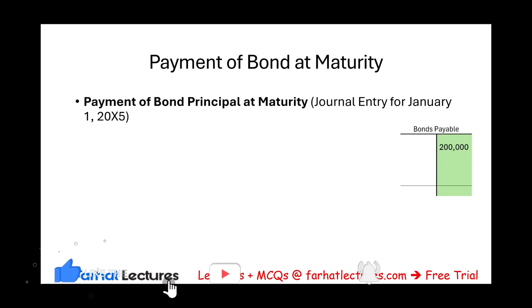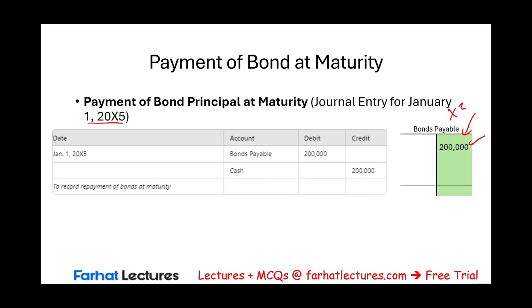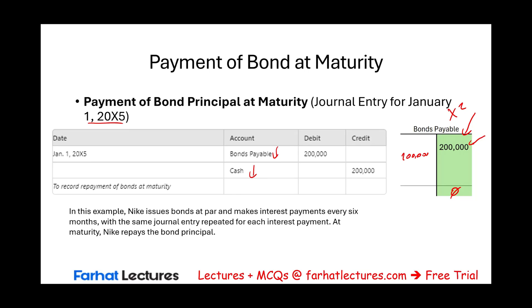Then on January 1st, 20X5, what happens to this bond? We established this bond in year X2, and now we have to pay it off. The company will pay back the face value of the bond because bonds payable is always recorded at face value — whether you received more than face value (premium bond) or less (discount bond), it's always recorded at $200,000. When we pay off the bond, we debit bonds payable $200,000 and credit cash $200,000. The bonds payable is paid off and the bond is retired — bonds payable goes to zero.